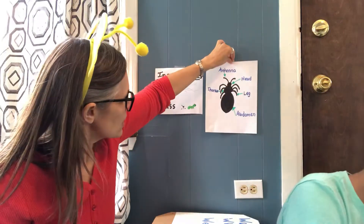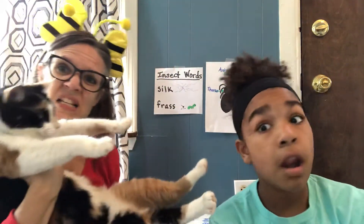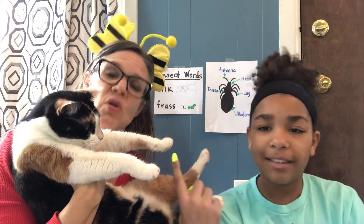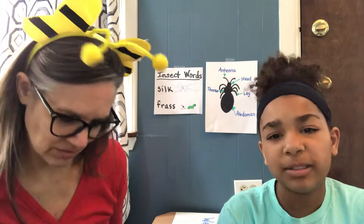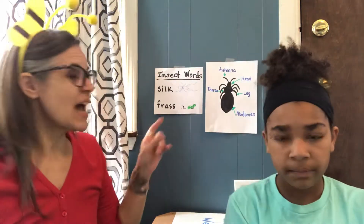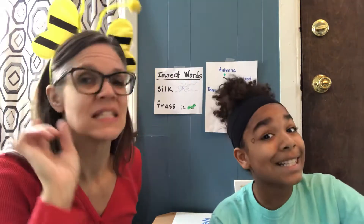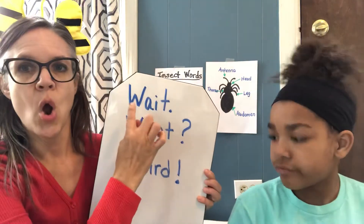To be an insect you have to have six legs. Is this a cat an insect? No — how do you know? It has four legs. Does our cat have antennae? No. Any wings? No. Head, thorax, abdomen? No. So if it has zero legs, it's not an insect; if it has a hundred legs, it's not an insect. It has to have six legs.